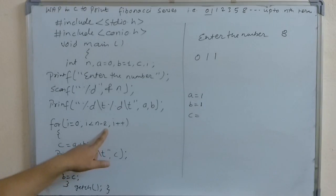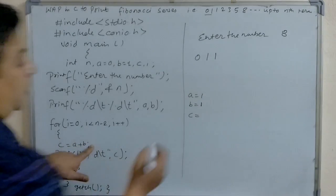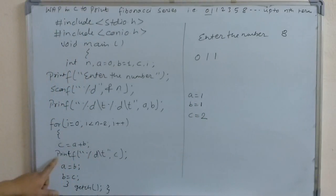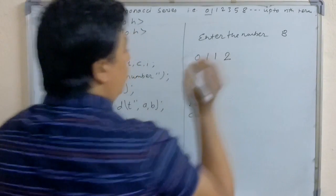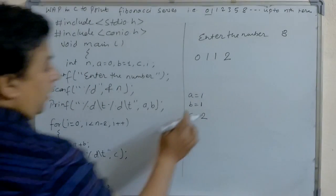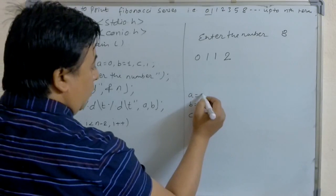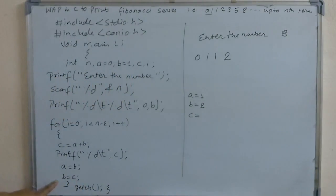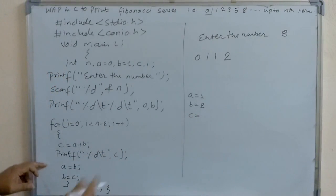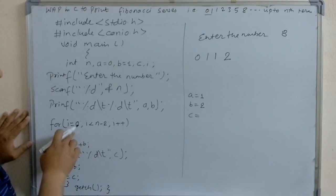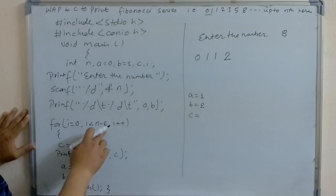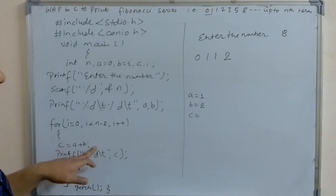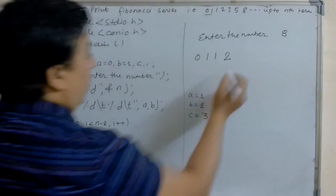In the next iteration, c is equal to a plus b — a is 1 and b is 1 — so 1 plus 1 is 2, and c becomes 2. It prints 2. Then a becomes b (which is 1) and b becomes c (which is 2). i increments to 2, and 2 is less than 6, which is true. So c equals a plus b — now 1 plus 2 is 3. It prints 3.